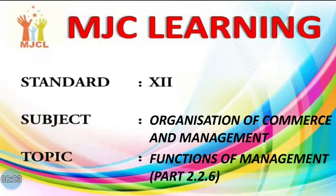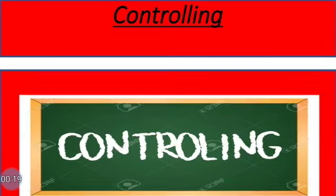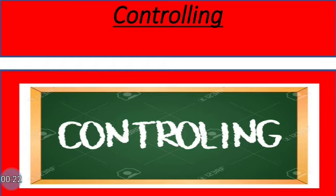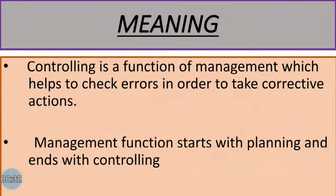Hello students, welcome to MJC Learning. Today we will study the last function of management, that is controlling, from Standard 12th Chapter 2, OCM subject. Controlling is one of the most essential qualities required in a manager, which allows him to direct and control actions. Controlling is a function of management which helps to check errors in order to take corrective actions.